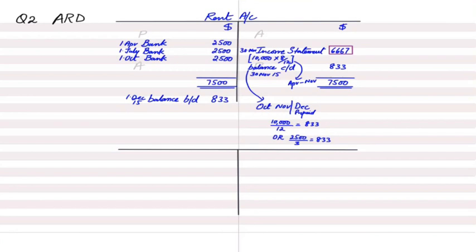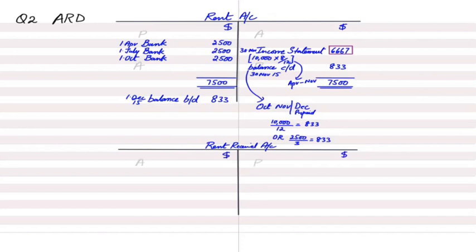Looking at the second part of the question: on 1st May, ARD realized the premises were larger than required and sublet part of it to a tenant for an annual rent of £6,000. So ARD is now a landlord receiving £6,000 income, and we need to prepare a rent receivable account — an income account.